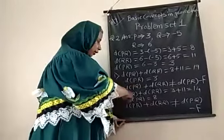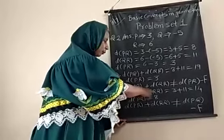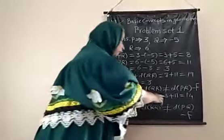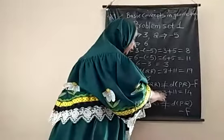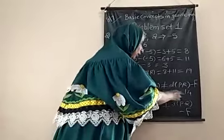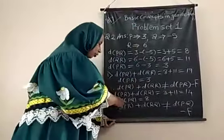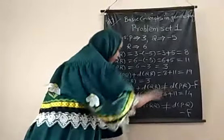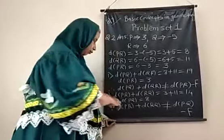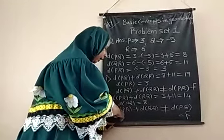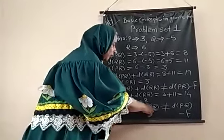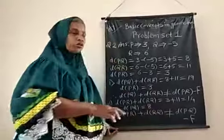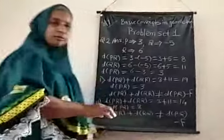In the second sub-question, distance PR and distance QR are both added. The addition is three plus seven equals fourteen, and distance PQ is eight. Fourteen is not equal to eight, so distance PR plus distance QR is not equal to distance PQ — the second statement is also false.